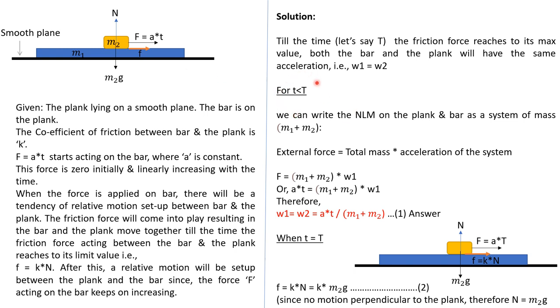So first we should go ahead with when small t is less than capital T. So till the time t reaches to capital T, both bar and plank are moving together. So this we can consider as a system. So what is the mass of the system? m1 plus m2. External force applied on the system will be total mass times acceleration of the system, Newton's second law, because both are having the same acceleration, so we have written w1. And the same, during till capital T time, w1 will be equal to w2, where w1 is the acceleration of plank and w2 is the acceleration of bar.